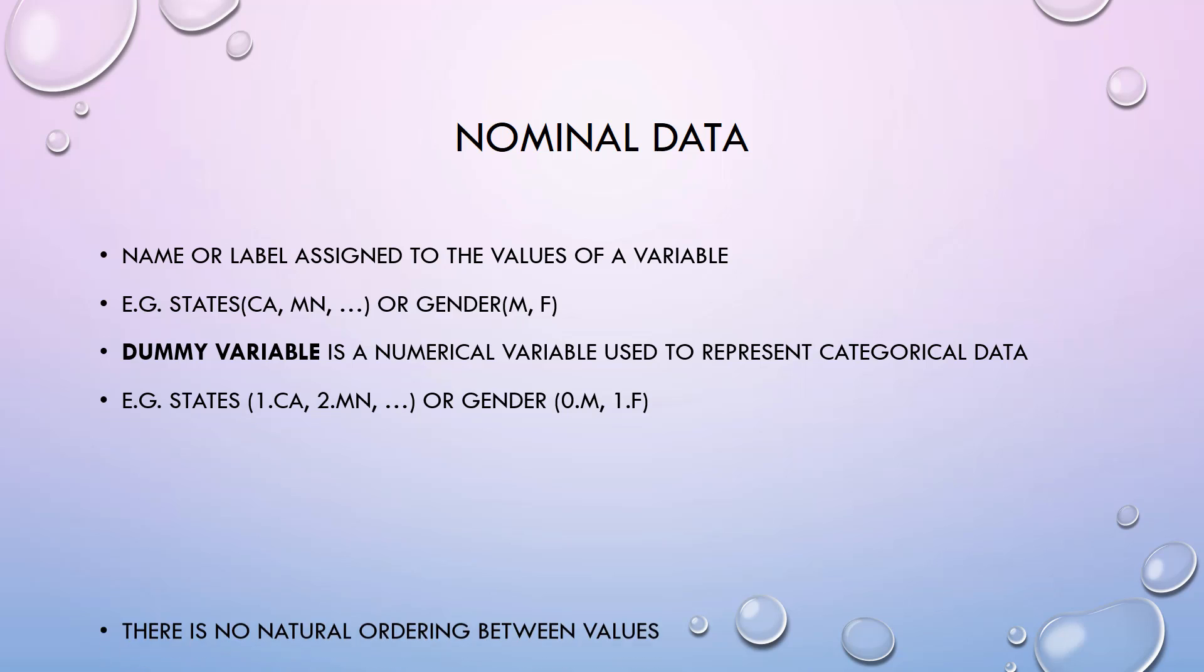The nominal data type is just a name or label that is assigned to the values of a variable. For example, the name of the states or gender is a nominal variable.